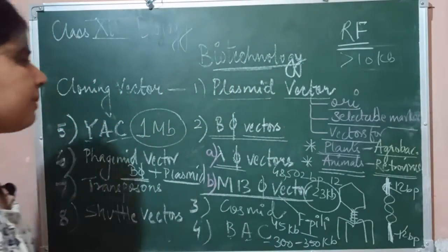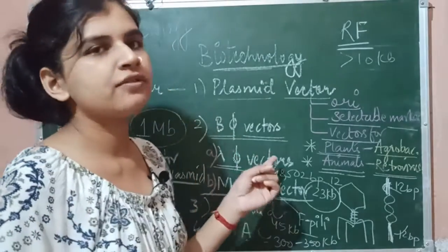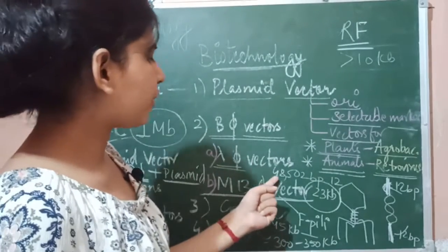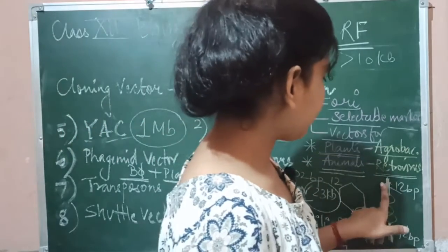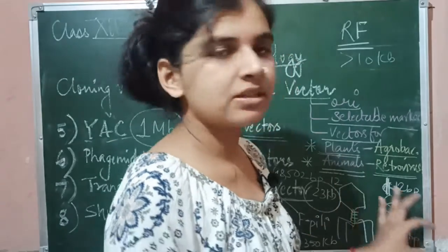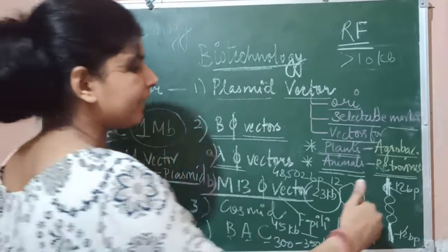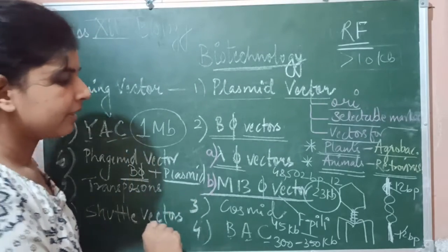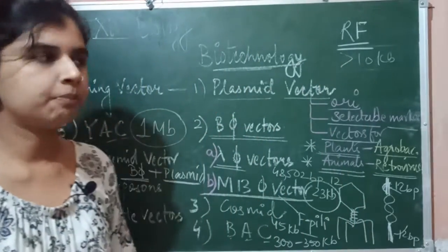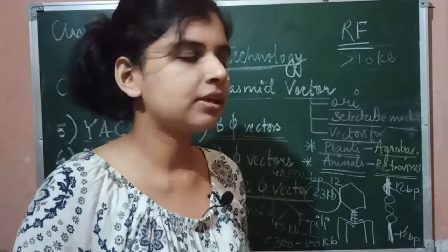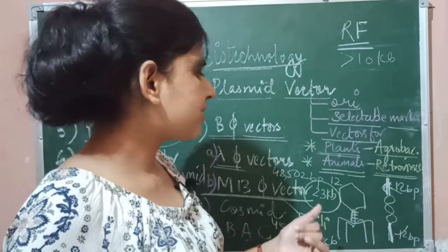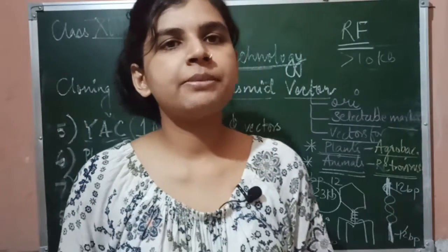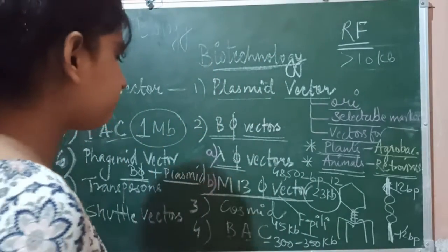After that we discussed bacteriophage vectors. There are two categories: the lambda phage and the M13. In lambda phage there are 48,500 base pairs, with 12-base-pair single-stranded palindromic ends that form a circular ring when inserted into E. coli. In M13 there is an F-plus-like structure, and when circular they form the replicative form — we can insert less than 10 kb DNA into M13, and in lambda phage we can insert about 12 kb.